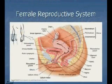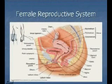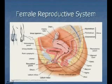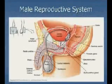The reproductive system will also be covered as part of A&P Part I — both the female reproductive system and the male reproductive system. Not only will you have to identify these anatomical structures, but you'll also have to appreciate the functions of the various structures as well.